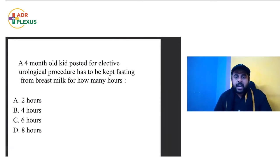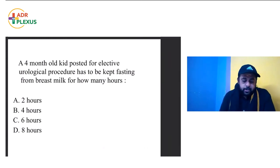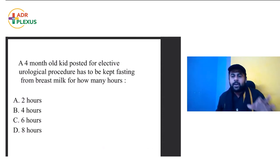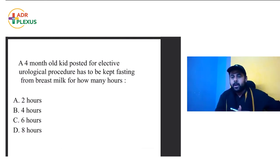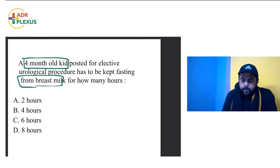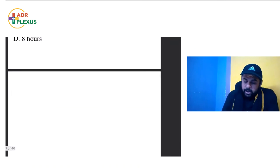The next question: a 4-month-old kid is posted for an elective urological procedure. He has to be kept fasting from breast milk for how many hours? The options are 2, 4, 6, and 8 hours. For adults, we say overnight fasting, but there are specific NPO guidelines specifying how many hours fasting is required for different food types in both adults and children.